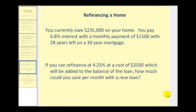Let's take a look at one more example. A lot of people are thinking about refinancing a home right now. If you currently owe $235,000 on your home and you pay 6.8% interest with a monthly payment of $1,500 with 28 years left on a 30-year mortgage, and if you can refinance at 4.25% at a cost of $3,500 which will be added to the balance of the loan, how much could you save per month with a new loan?